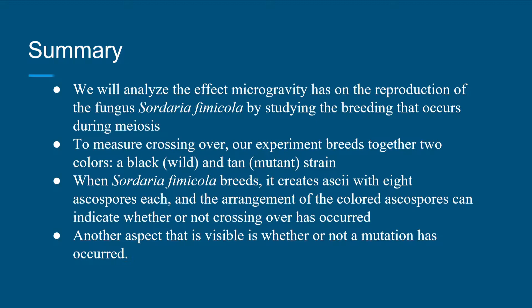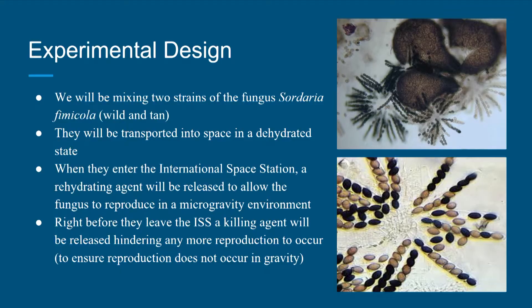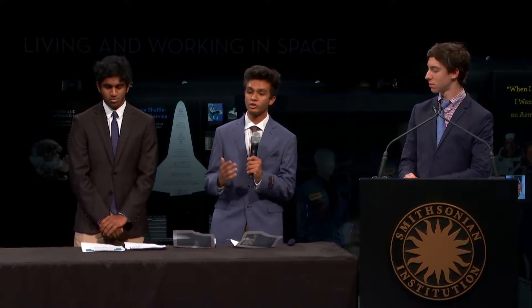The offspring produced during the experiment will be visible to us underneath a microscope. To inhibit the fungus from reproducing during transportation to space, we loaded it in the dehydrated state. But while in space, a rehydrating agent will be released, allowing the Sordaria to become active and reproduce. To make sure that reproduction doesn't occur on its way back into Earth's atmosphere, a killing agent will be released to preserve our results. We chose sodium chloride as a killing agent specifically to preserve our results and ensure no more reproduction occurs.